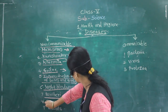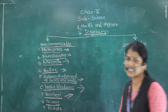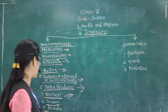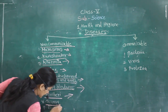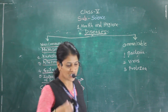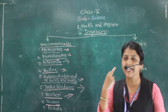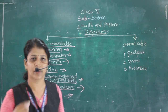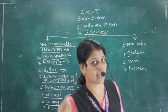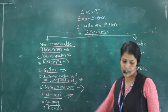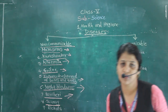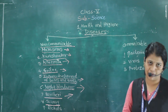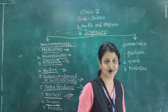Next is scurvy, a disease caused due to the lack of vitamin C. What happens is bleeding of the gums — the teeth become yellowish and blood starts coming. For treatment, give vitamin C-rich foods such as amla and citrus fruits.